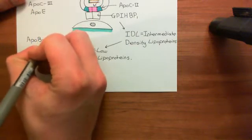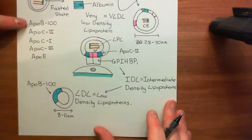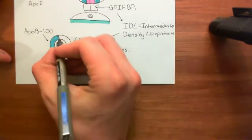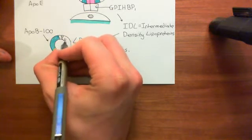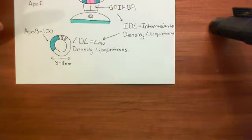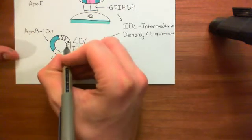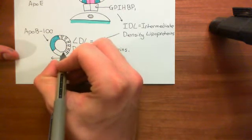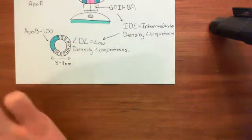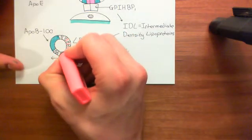What you end up with in these tiny low-density lipoproteins is a single apolipoprotein, and the one which remains is apolipoprotein B100, which is the biggest of all the different types of apolipoprotein. So all LDL molecules have a single apolipoprotein, apolipoprotein B100. Within the phospholipid monolayer, you will have lots of cholesterol molecules with their alcohol groups facing out, dotted amongst the phospholipids.